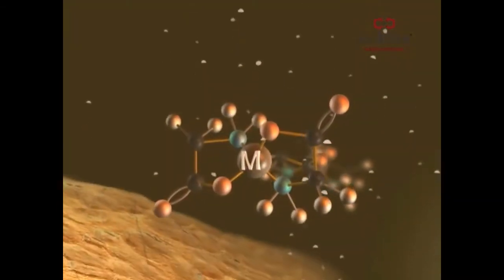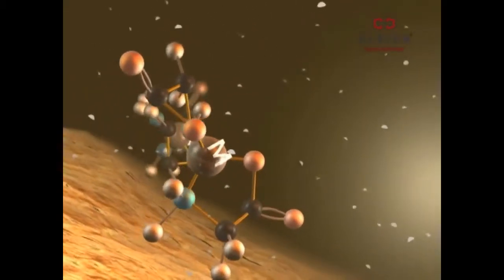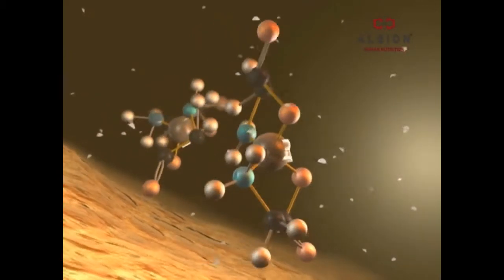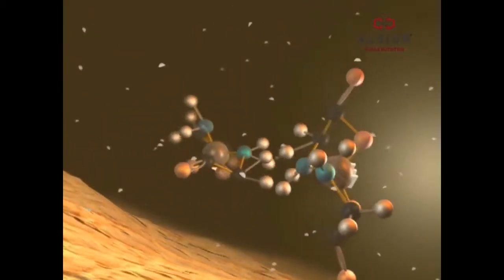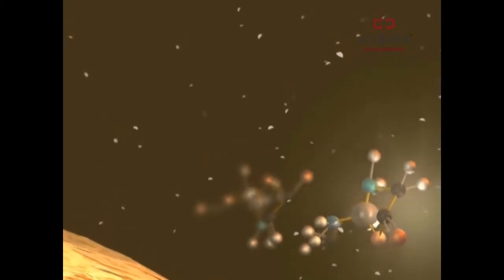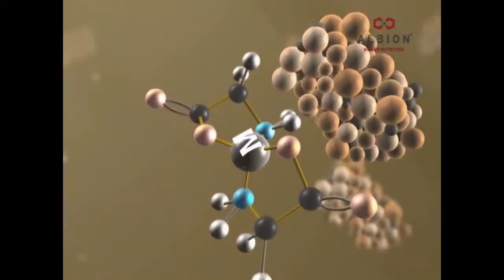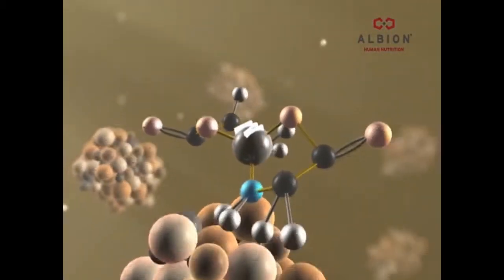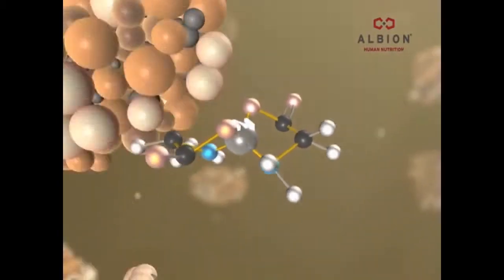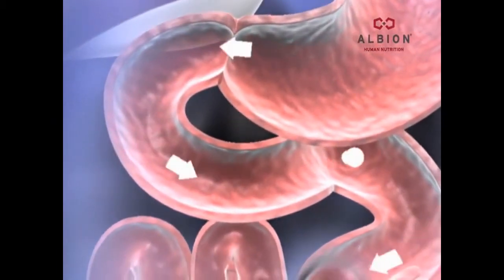The amino acids wrap around and protect the mineral through the digestion process and do not dissociate like the mineral salt. Carrying a neutral ionic charge, the Albion mineral does not attach to random food particles present in the stomach and intestine. This is why Albion's track range of chelated mineral products have up to 20 times greater bioavailability than other mineral forms.